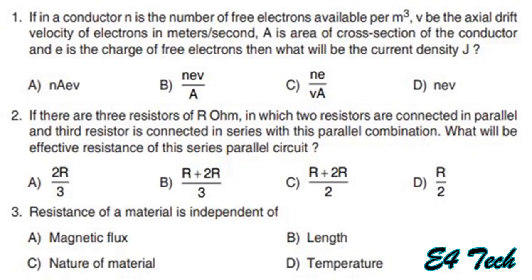The first question is: if in a conductor, n is the number of free electrons available per meter cube, v is the axial drift velocity of electrons in meter per second, a is the area of cross-section of the conductor, and e is the charge of free electrons, then what will be the current density?